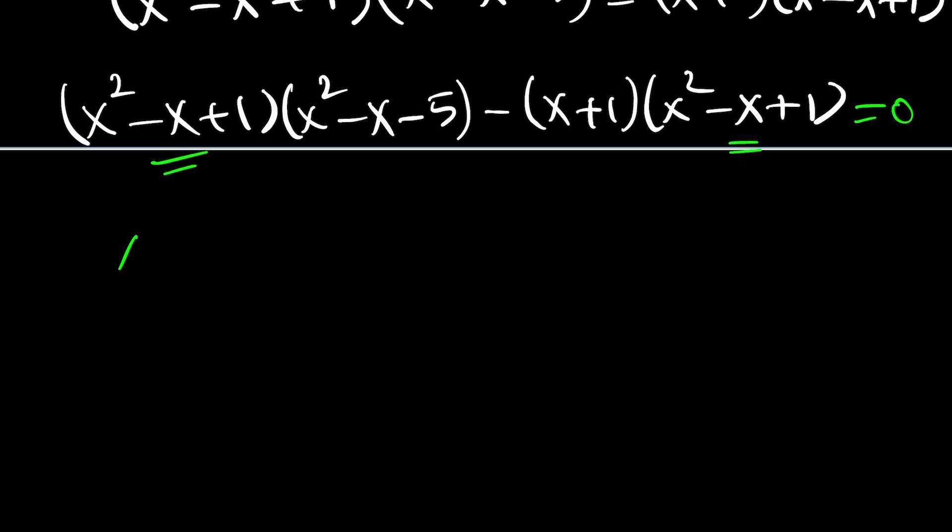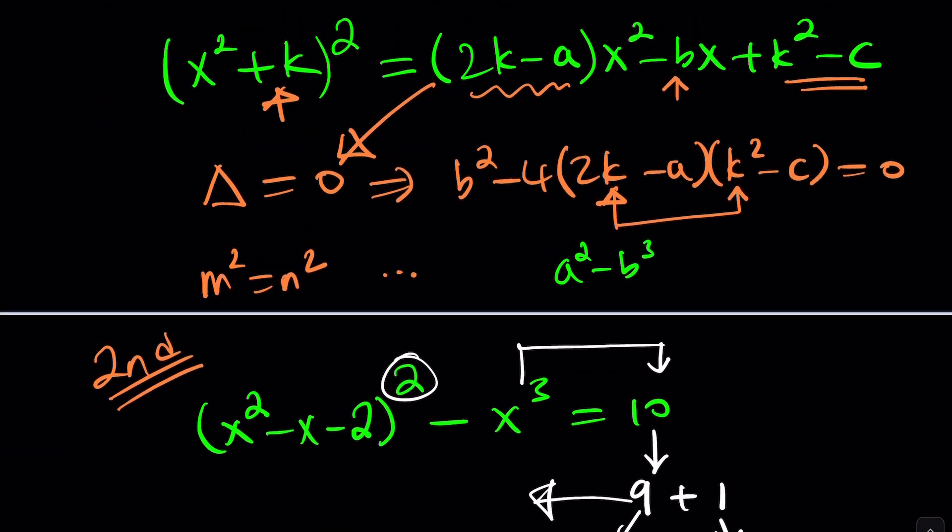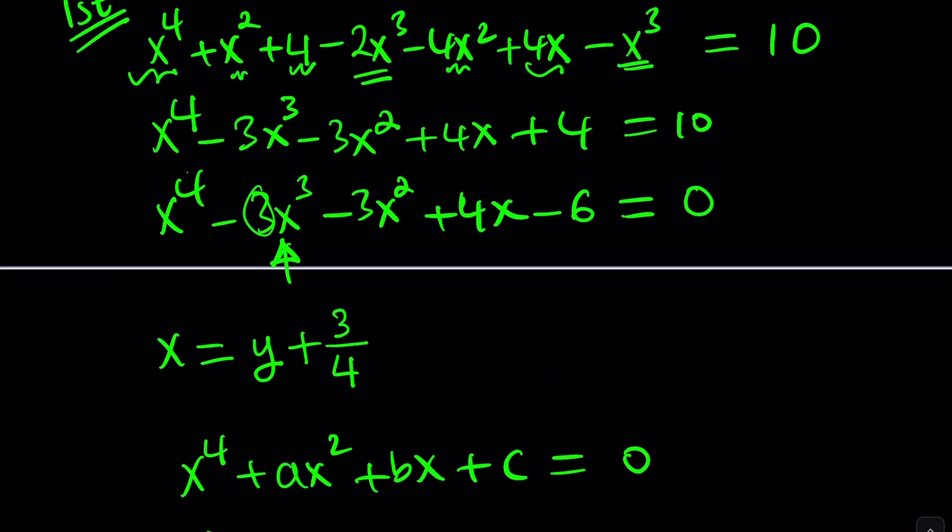This is equal to 0 now. Notice that this is a common factor. So, we're going to take it out. x squared minus x plus 1 multiplied by this minus this. x squared minus x minus x. That's going to be x squared minus 2x. Minus 5 minus 1 is going to be minus 6. And now, you have the factors. Who would have thought that our expression originally would be factored like this?